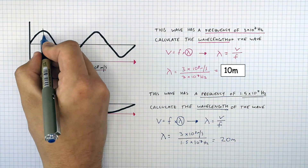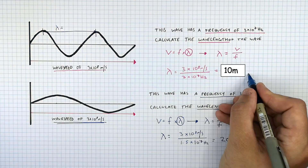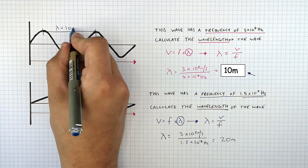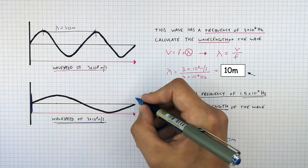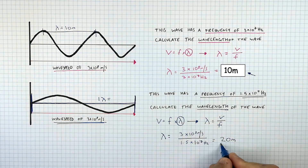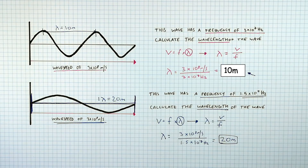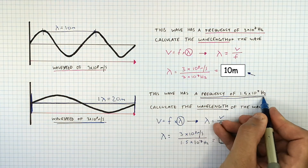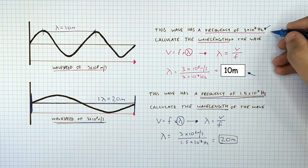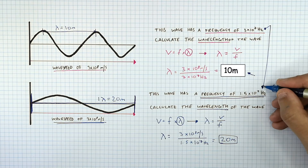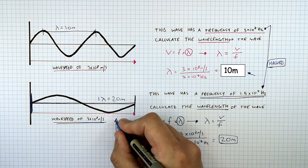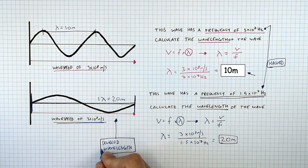For the top wave, you worked out the wavelength which was 10 metres — so one wavelength is 10 metres. On the second wave, you worked out that one wavelength is 20 metres. So for waves travelling at the same speed, if the frequency is halved — 1.5 times 10 to the power of 7 hertz is half of 3 times 10 to the power of 7 hertz — if you halve the frequency, you're going to double the wavelength. That's only if the waves are travelling at the same speed.